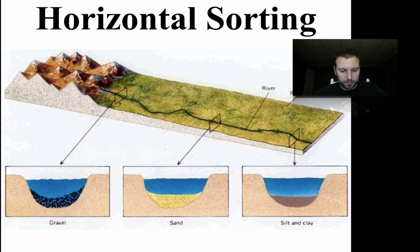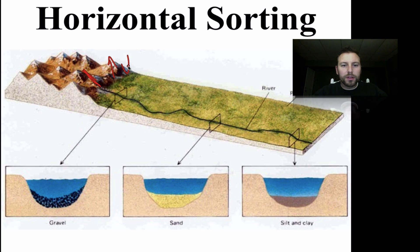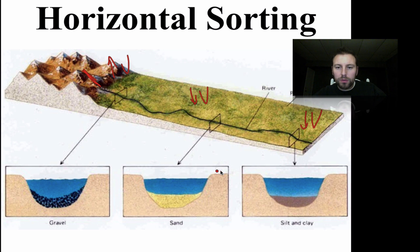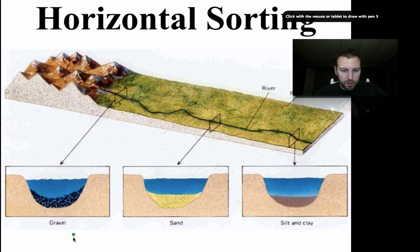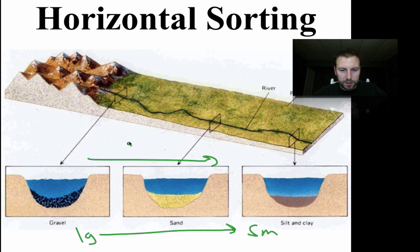Here's more horizontal sorting, this time related to the gradient of a stream. With a high gradient near the source region, we have increased velocity, so large particles are found there. As velocity decreases further along, we get smaller and smaller particles — from large near the source down to small as velocity decreases.